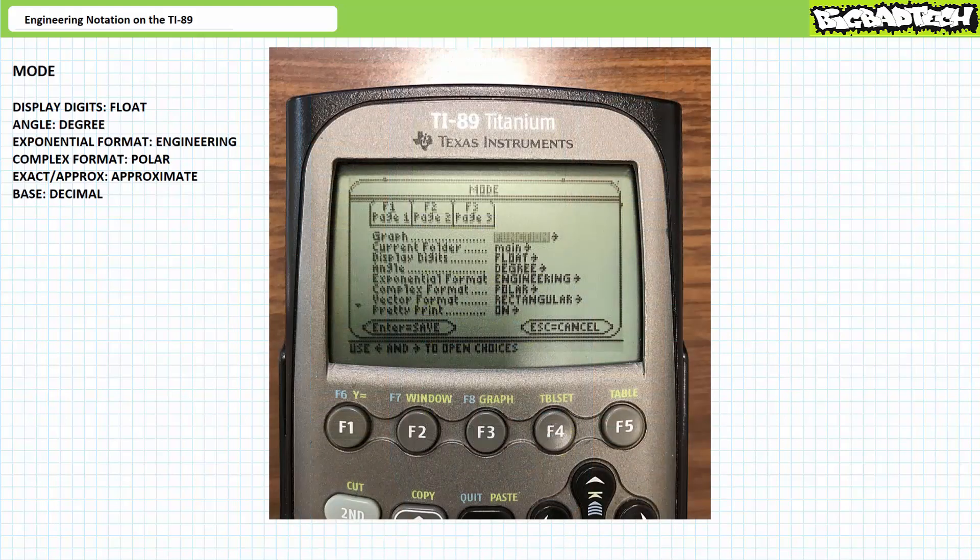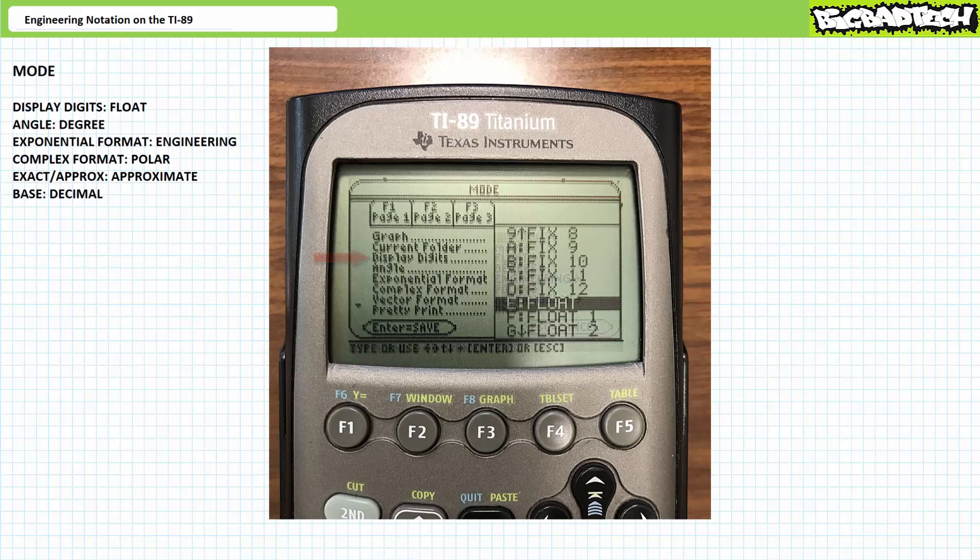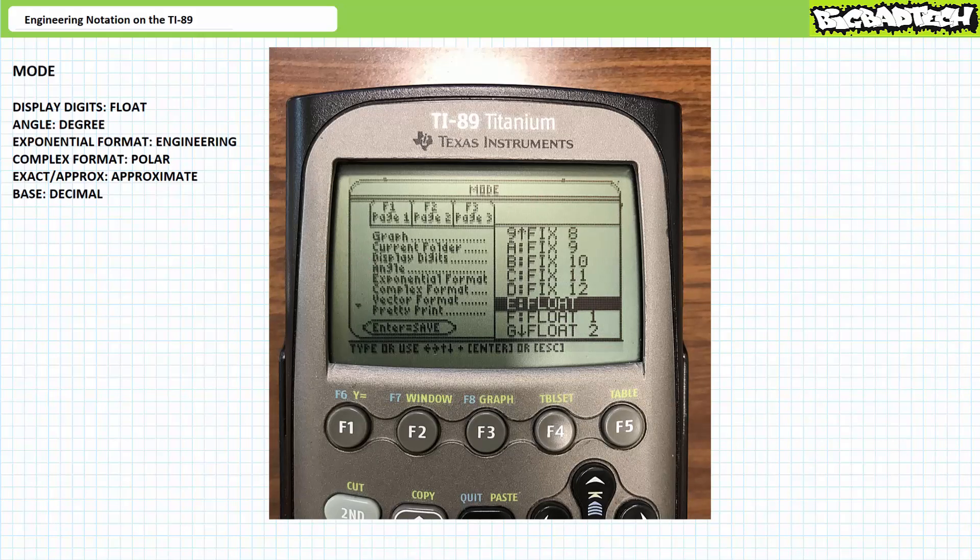The first screen has eight options which you can choose from. We're gonna deal with four of them, principally display digits, angle, exponential format, that's kind of the topic of today's lecture, and complex format. Walk down to display digits using the down arrow and then press the right arrow key to access the menu. There should be a list going from one to Q. Walk down the list with a down arrow key. The option I'm gonna choose is E, float. Not float one or float 12, straight up float.